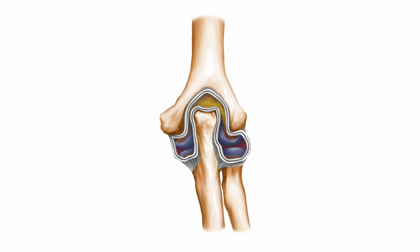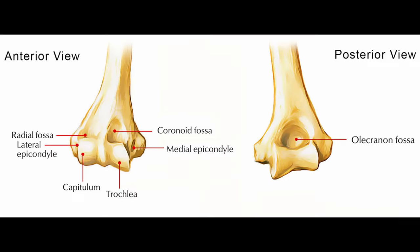The synovial cavities of these three elbow joints communicate freely. The joint capsule is easily visualized posteriorly in elbow flexion within the olecranon fossa, a large hollow accommodating the olecranon process during extension, and in the coronoid fossa, a small hollow on the anterior aspect of the distal humerus. In cases of arthritis or joint effusion, these fossae show fluid distension and serve as targets for needle insertion.